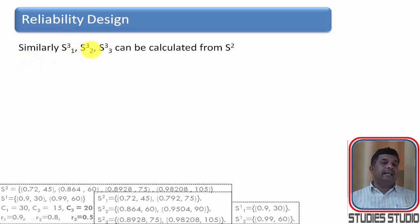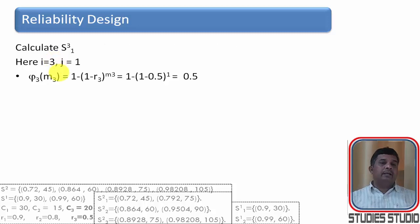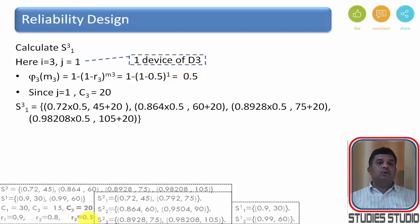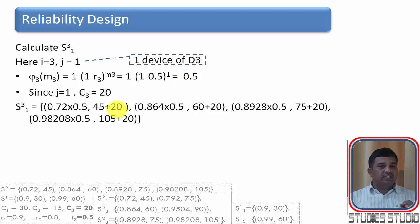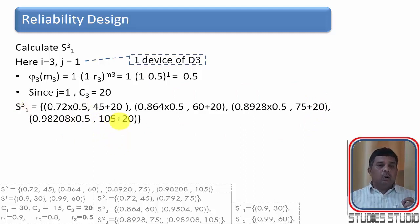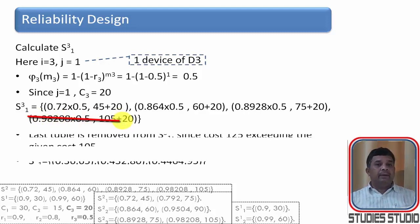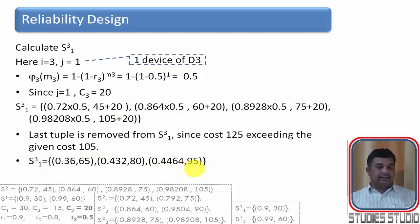Using S_2 we compute S_{3,1}, S_{3,2}, and S_{3,3}. For S_{3,1} — one device of D3, reliability = 0.5, cost = 20. Multiplying reliabilities and adding costs from each S_2 pair: (0.72 × 0.5, 45+20) = (0.36, 65) and (0.864 × 0.5, 60+20) = (0.432, 80). The last pair from S_2 gives cost 105+20 = 125, which exceeds the budget of 105, so it is eliminated.